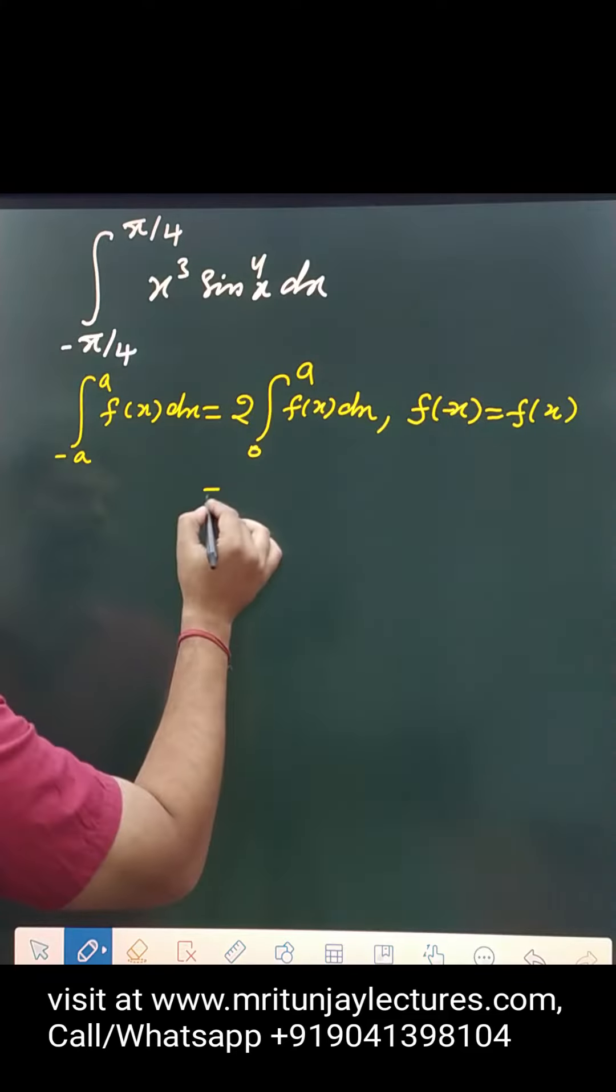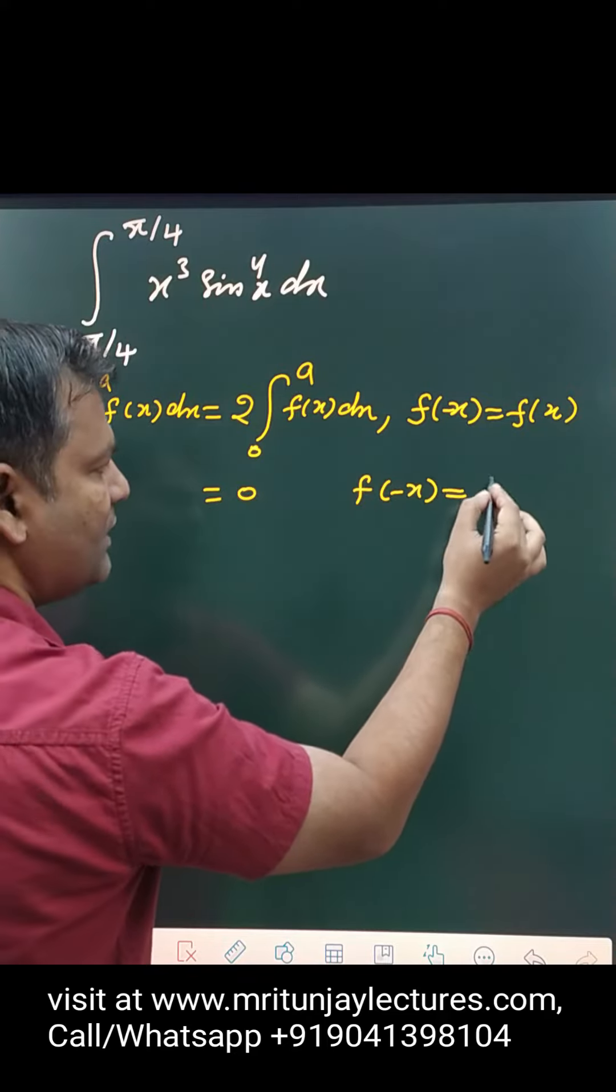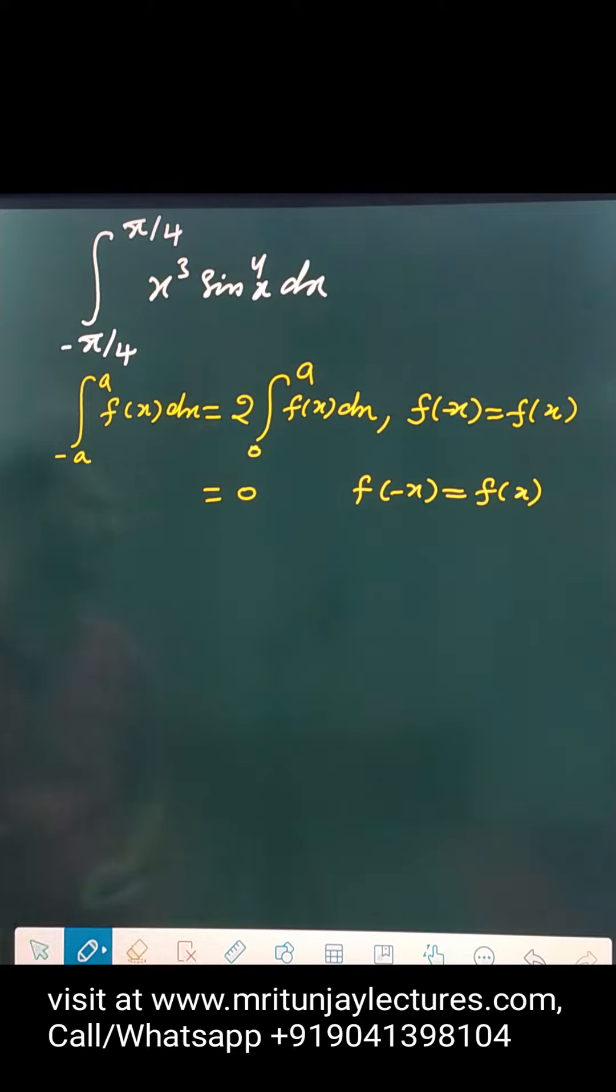Now, if this one is odd function, that is 0, means f of minus x will be equal to f of x.